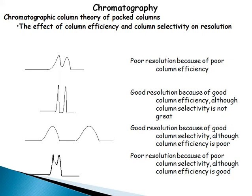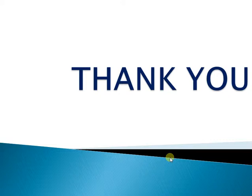Chromatography column theory covers column efficiency and column sensitivity. Column efficiency and column selectivity together determine resolution. Poor column efficiency or poor selectivity can lead to poor resolution; good column efficiency with adequate selectivity gives good resolution. These are the topics discussed regarding the background and history of chromatography. Thank you very much.